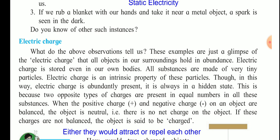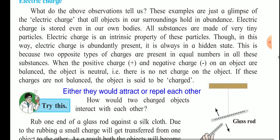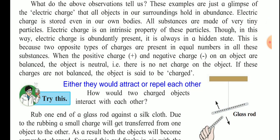If positive and negative charges on an object are balanced, the object is neutral — there is no net charge. If they are not balanced, we say the object is charged. The next question is: how do two charged objects interact with each other? Two charged objects either attract or repel each other.